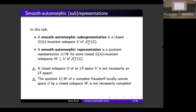In analogy with this, let us define a smooth automorphic sub-representation as any closed G(A)-invariant subspace U of the space A∞_J(G), and a smooth automorphic representation as any quotient representation U modulo W, where U and W are some closed G(A)-invariant subspaces of A∞_J(G), and of course W is contained in U. Now, these two definitions seem benign enough, but in fact there might be some hidden trouble here. Namely, it turns out that a closed subspace of an LF space is not always an LF space itself.